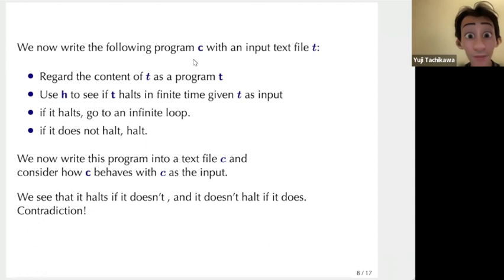We now write the following program C, which receives a text file T as an input. This program starts by treating the content of the given text file as another program T. It uses the program H to see if T halts in finite time if it is given T as an input. If H says that T halts with T as input, then this program C goes to an infinite loop. On the other hand, if the program H says that T does not halt in finite time, then this program C halts instead.